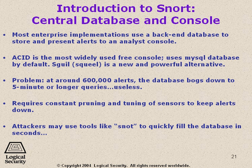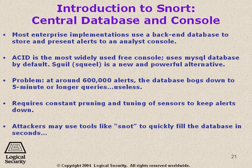Here's a problem: at around 600,000 alerts, the database bogs down to five-minute or longer queries — and that's useless. Once you start packing a database with too many records, it is very difficult to get any information from it; it's just too big to cope with. It requires constant planning and tuning of the sensors to keep false positives down. Attackers may also use tools to quickly fill the database in seconds — that's one tactic for overcoming an IDS: completely fill its logs so that finding your attack is like finding a needle in a haystack.